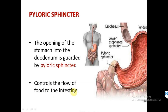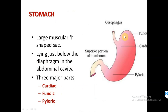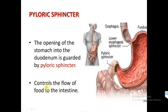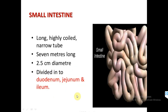The pyloric sphincter guards the opening of the stomach into the duodenum. After the esophageal sphincter helps move food into the stomach, the food must then move to the duodenum — the first part of the small intestine. The pyloric sphincter at the pyloric part of the stomach controls the flow of food into the intestine.